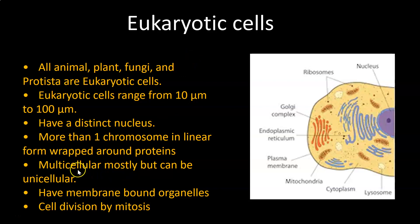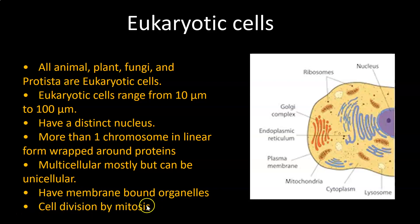Eukaryotic cells exist mostly as multicellular organisms, but they can also exist as unicellular. As you can see from this picture, as well as the nucleus, every other organelle is distinctive because they are all membrane-bound. Another distinctive difference is how the cells divide: division in eukaryotic cells is achieved by a process called mitosis, which we'll cover in a later video.